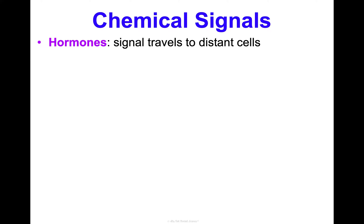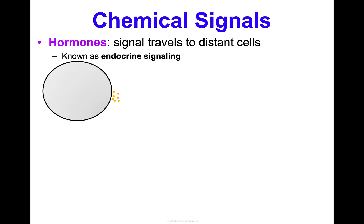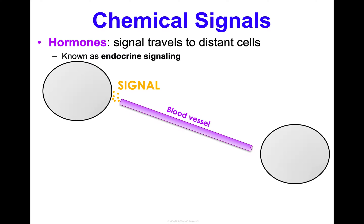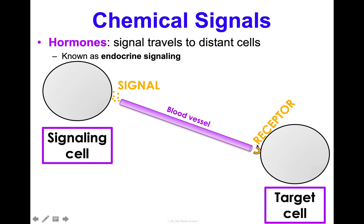The last type of chemical signal I want to highlight are hormones. Hormones are signals that can travel to distant cells — another word for this is endocrine signaling. They can get into a blood vessel and travel to a cell in an entirely different part of the body that has the appropriate receptor protein to receive the signal. Some examples are progesterone and testosterone — hormones important in regulating reproduction that can travel far distances through the blood to be received by a target cell.